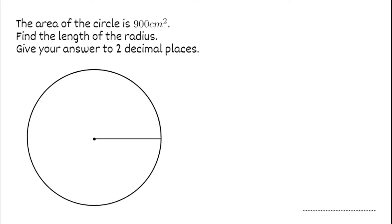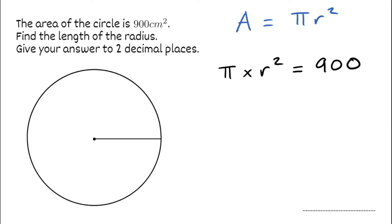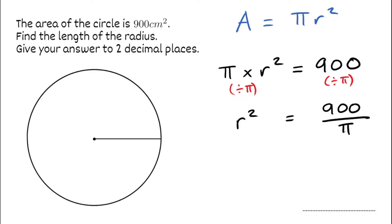For our next question, we've got the area of the circle is 900 centimetres squared. We've got to find the length of the radius, giving our answer to two decimal places. For a question like this, we're going to use the formula again, but we're kind of using it back to front. The area is equal to pi multiplied by r squared. In the other questions we substituted in a value for r to find the area; now we're given the area and want to find the radius. Because the area is 900, we can write pi times r squared equals 900. Now we rearrange — we divide both sides by pi, which gives us r squared equals 900 divided by pi.